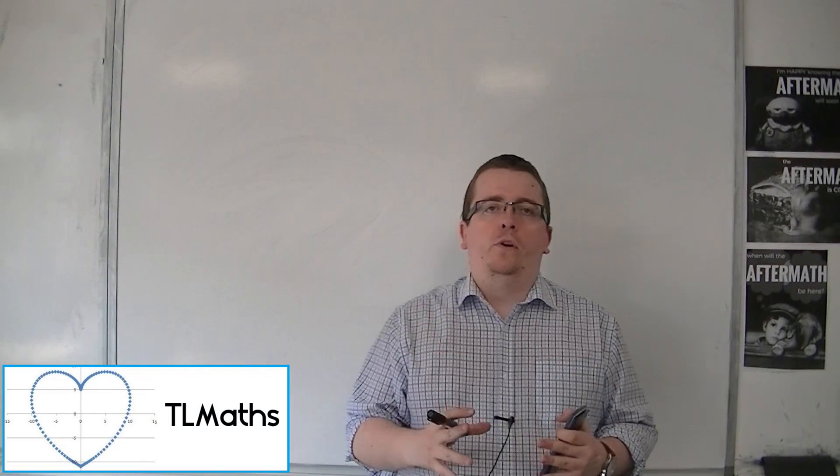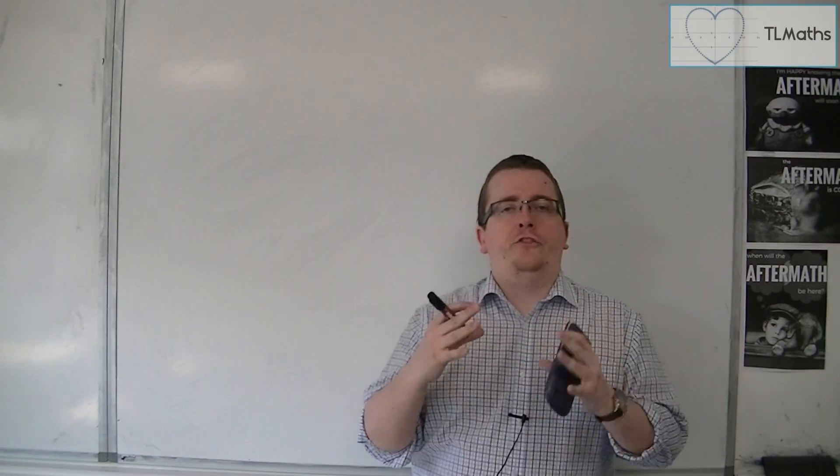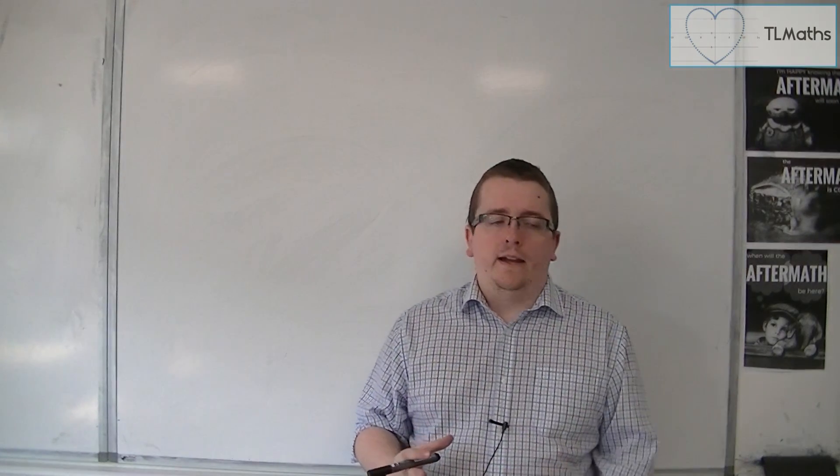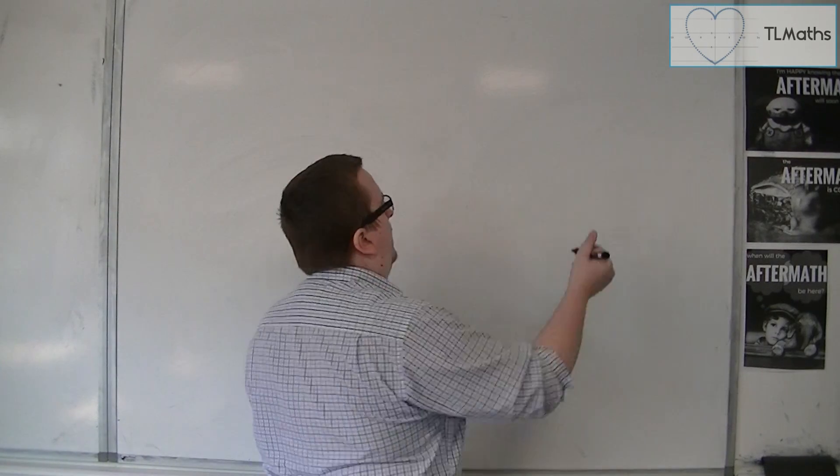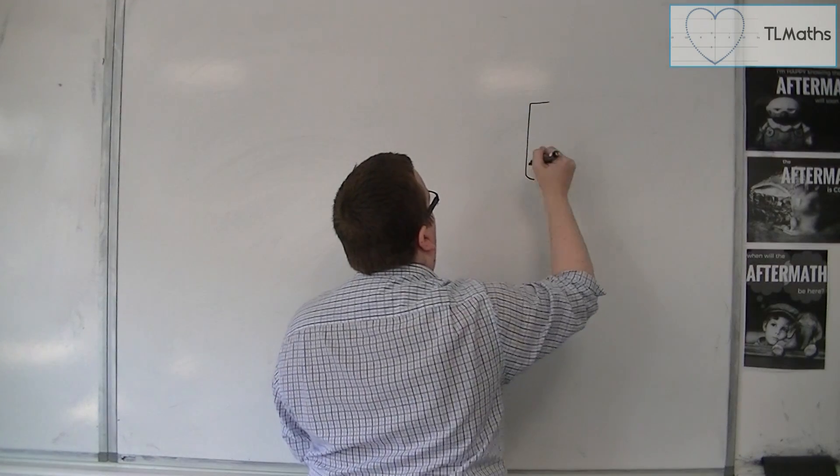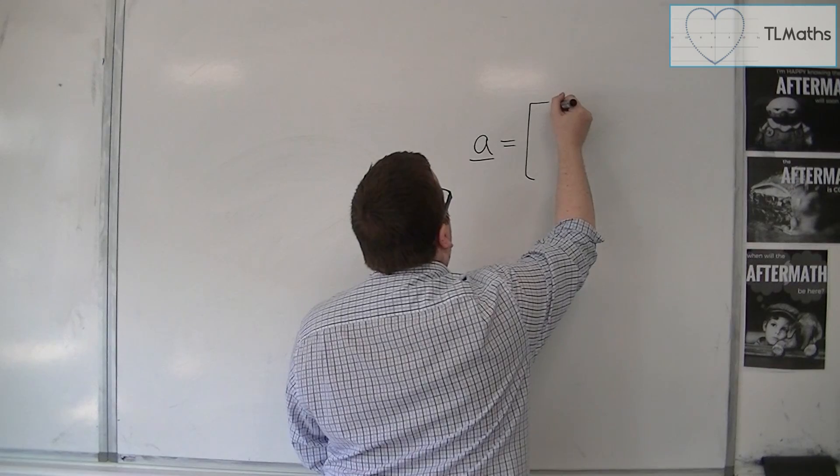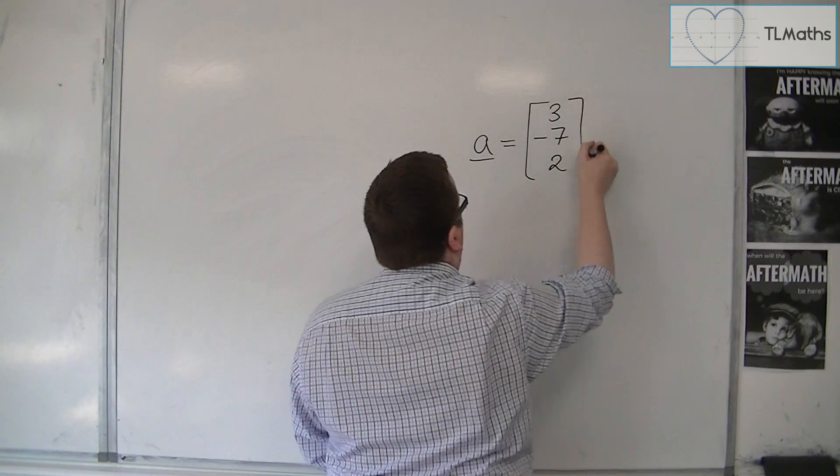A very useful little bit of kit is knowing how to find a unit vector in a particular direction. So let's say we had a vector that was, let's call it A, and let's say this vector was 3, minus 7, 2.